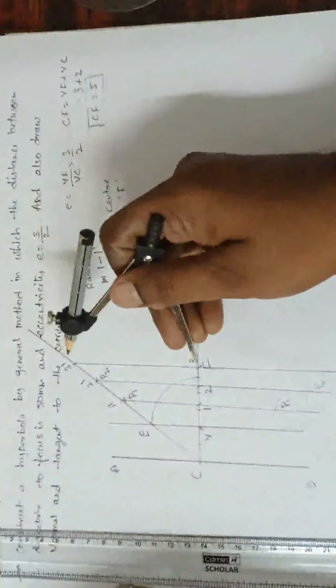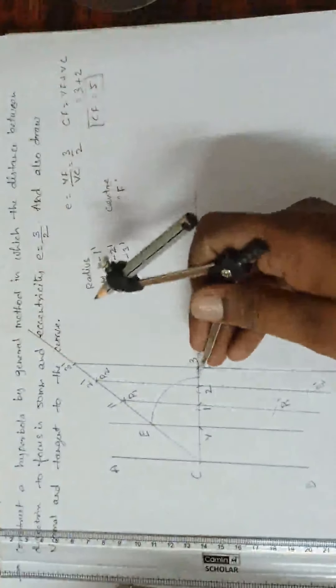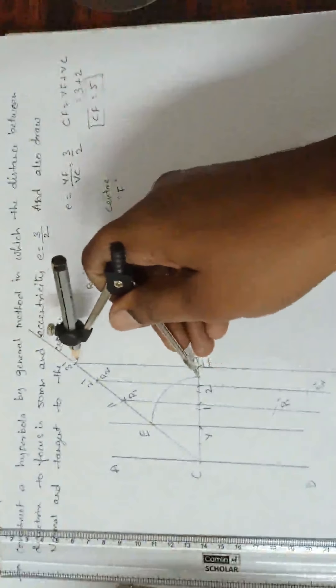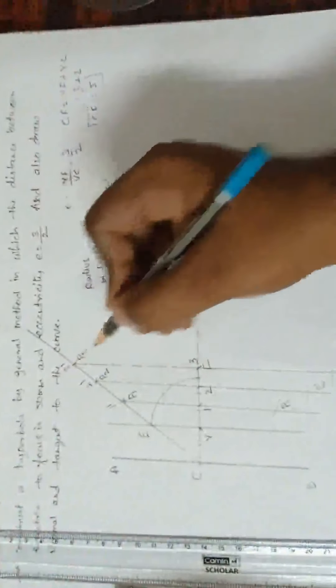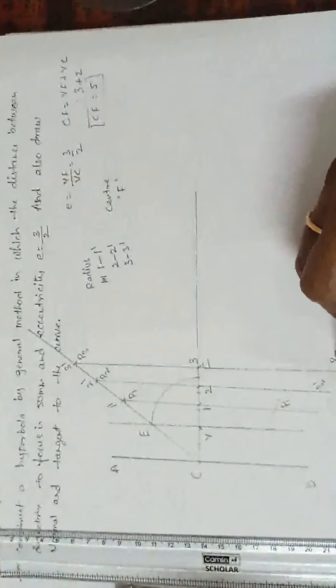3, 3 dash. Focus as center. Cut the 3, 3 dash line both sides. This is the point. This is the point P3 and P3 dash.